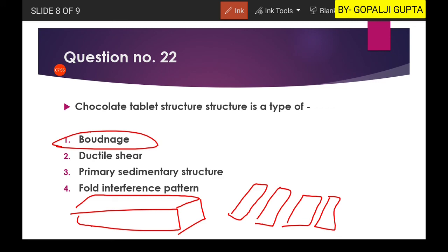But when it breaks down into two directions like this, then it will be called as the chocolate tablet structure.